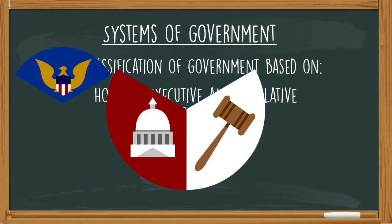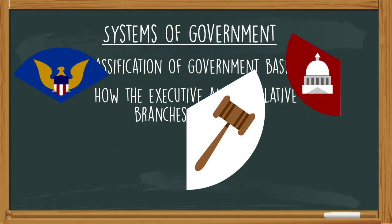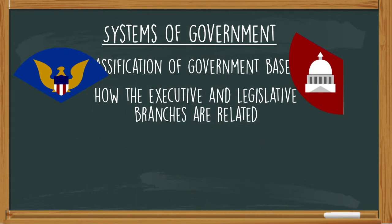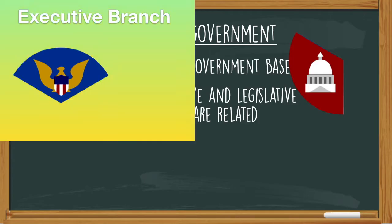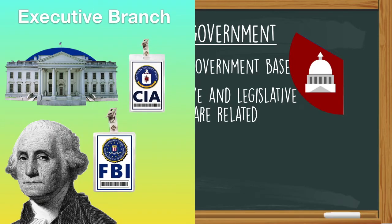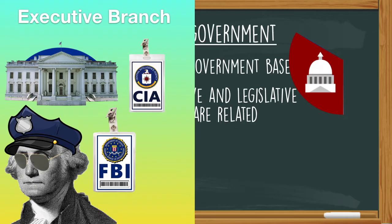If you're asking yourself what is the executive branch and what's the legislative branch, we're going to do a quick review. In the United States, the executive branch is represented by things like the president and the White House, but also those that work for the president like the FBI and CIA. The main job of the executive branch is to enforce the laws of the country.